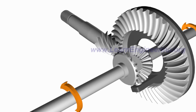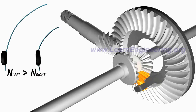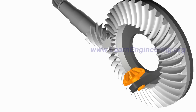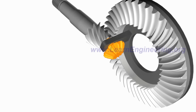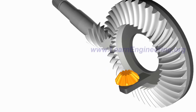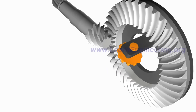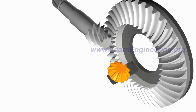Now consider the case when the vehicle is taking a right turn. The spider gear plays a pivotal role here. Along with the rotation of the ring gear, it also rotates on its own axis. So the spider gear has a combined rotation.